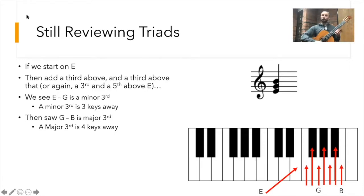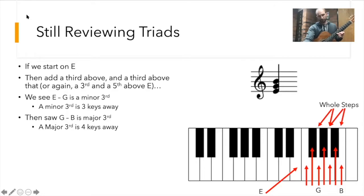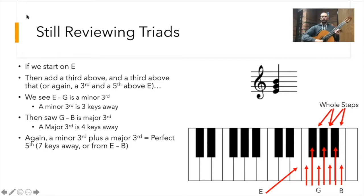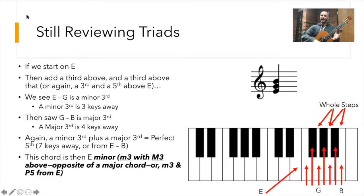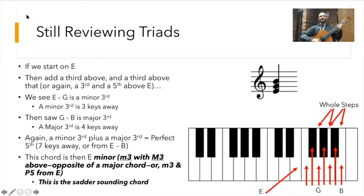So you have G, one, two, three, four frets — a fret on the guitar is a key on the piano. We see a major third on top of a minor third, which is two whole steps. A minor third plus a major third equals a perfect fifth — it's still seven keys away. Now we have a formula for a minor chord: a minor chord has a minor third on the bottom with a fifth above, or a minor third with a major third on top. This is the sadder sounding chord.